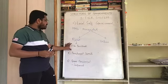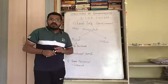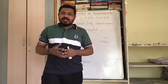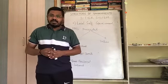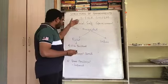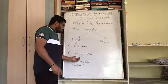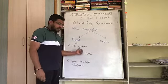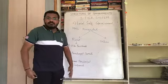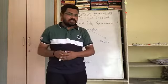Jilla Parishad comes under the state government, so all funds are released by the state government. The funds go from the Jilla Parishad to the Panchayat Samiti and then to the Gram Panchayat. This is how the rural local self-government functions.